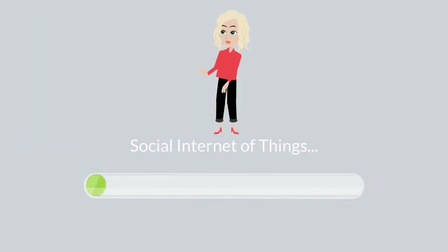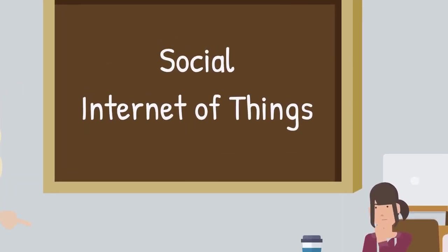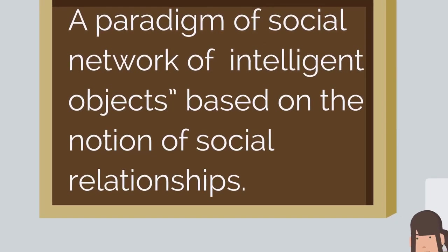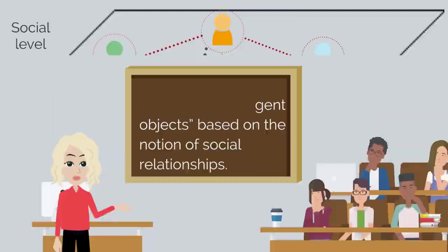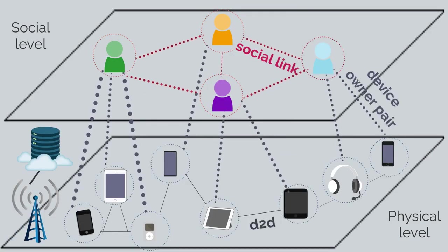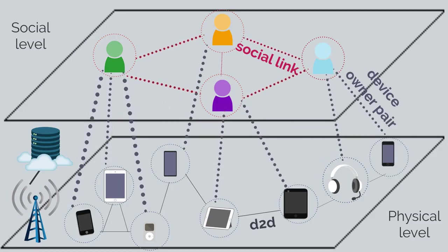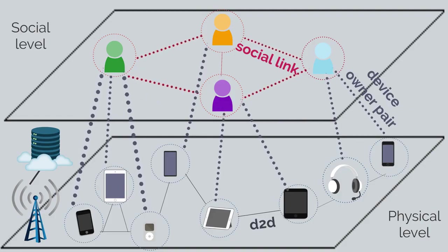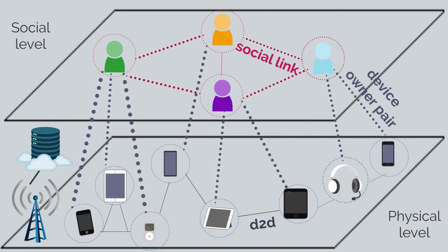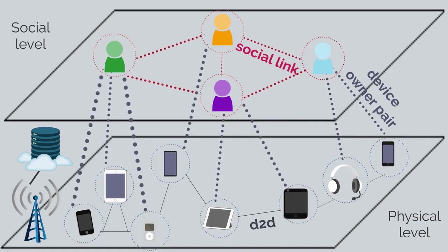Now we are ready to get back to the social Internet of Things concept. Social IoT is a paradigm of a social network of intelligent objects based on the notion of social relationships among objects. The objectives being pursued by the social Internet of Things paradigm are clear: to keep separate the two levels of people and things, to allow objects to have their own social networks, and to allow humans to impose rules to protect their privacy and only access the result of autonomous inter-object interactions occurring on the object's social network.